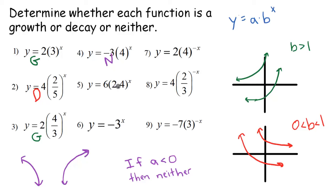Number 5, our b term is 2.4, which is greater than 1, so that's going to be a growth.